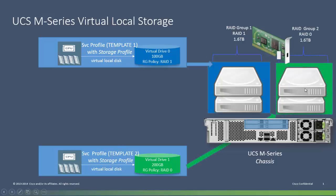What if there were another service profile that specified yet a third different RAID group policy with a different RAID level, and it also wanted to be associated with a server in this same chassis? At association time you would have a config error because there are no more disks available in the chassis to create a new RAID group. There can't be any failure until the service profile is associated, because you don't know which chassis you're talking about until then.